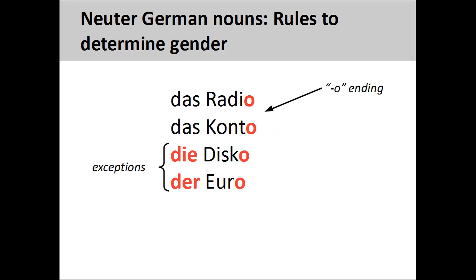Many nouns ending in '-o,' such as 'Radio' (radio) and 'Conto' (bank account), will be neuter, although it is important to note that there are numerous exceptions. 'Disco' (discotheque) and 'Euro' (the euro currency) are examples of exceptions.